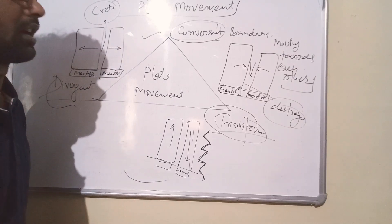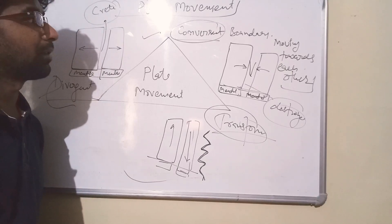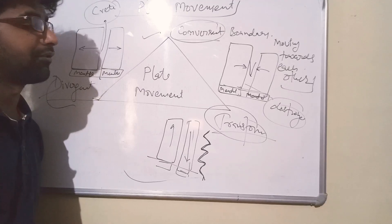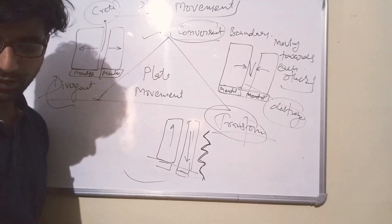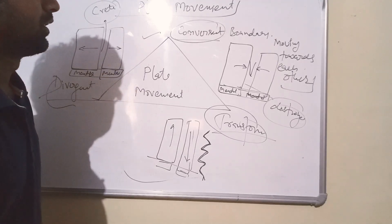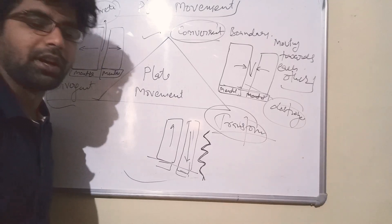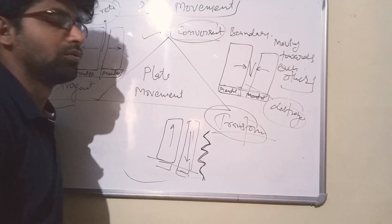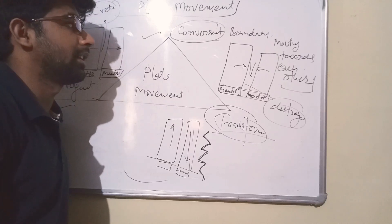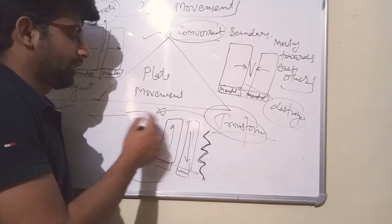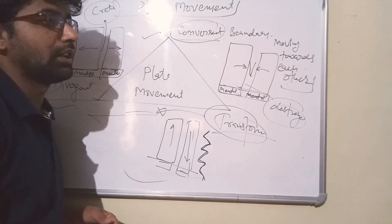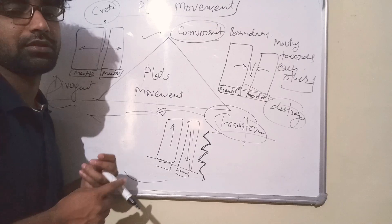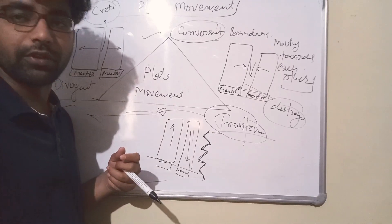So far we have studied the basic earth interior, the types of movement that occur in the earth, and plate movement. This is the first topic. Later on we will discuss the Himalayan mountain, the peninsular mountain, deserts, and islands. If you have any doubt, let me know in the comment section, and please fill up those minor plates on the map as well. Thank you very much.